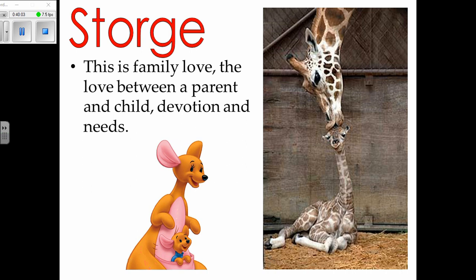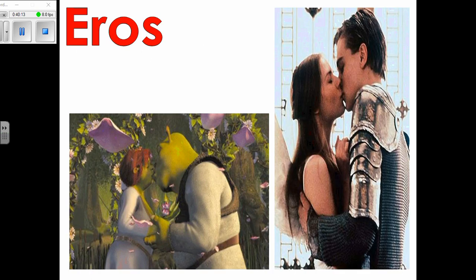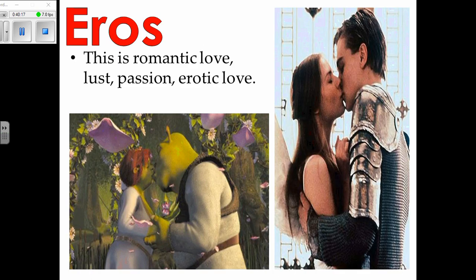The next form is storge — family love, love between children, parents, and relatives. This isn't good enough for an ethical theory because you cannot just say love your family — that won't apply to all humans equally.